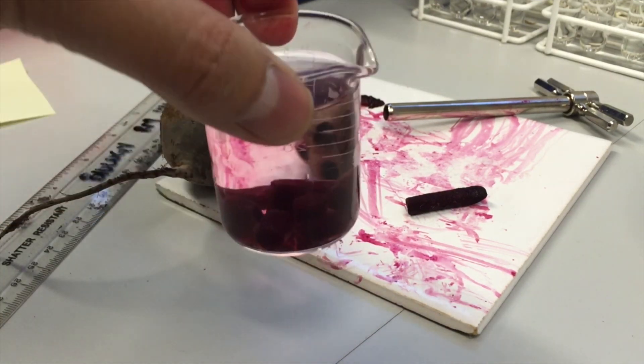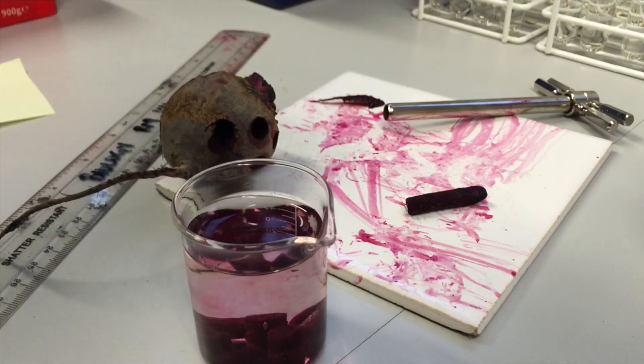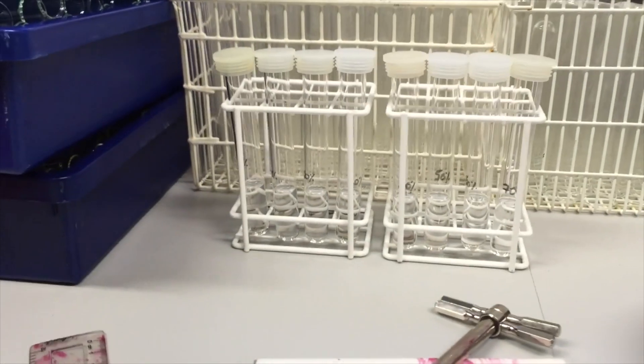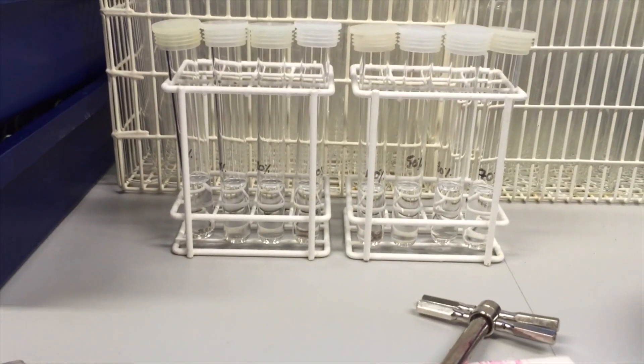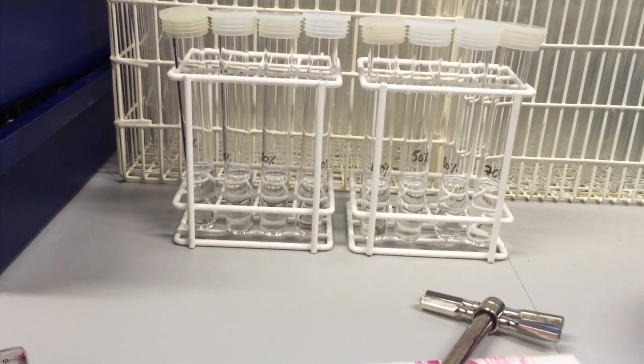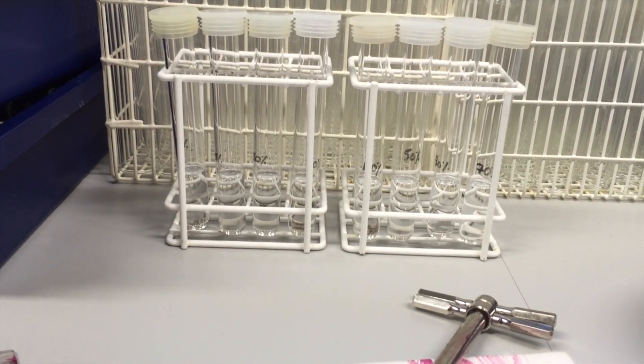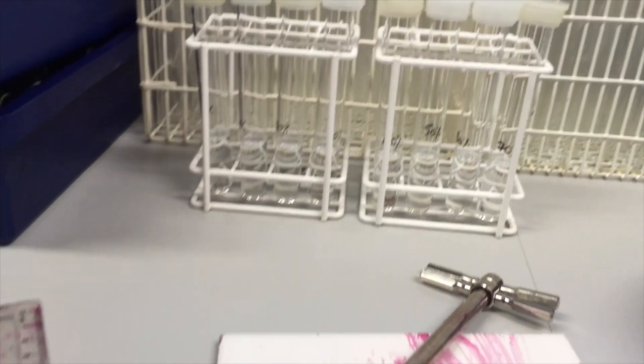What we're going to do is put these pieces in the test tubes that contain the different concentrations of alcohol, and we're going to look at the effect of that alcohol on how much dye is released from these sections.